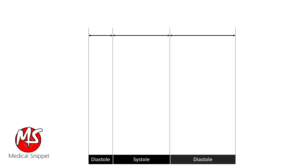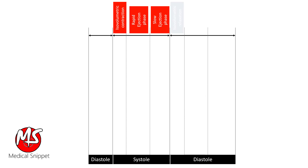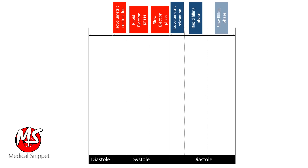Systole can be divided into three phases: isovolumetric contraction, rapid ejection phase, and slow ejection phase. Diastole can be divided into four phases: isovolumetric relaxation phase, rapid filling phase, slow filling phase, and atrial contraction.